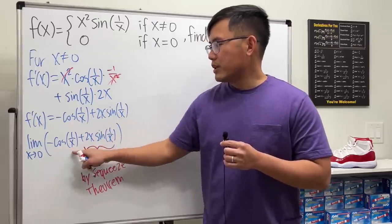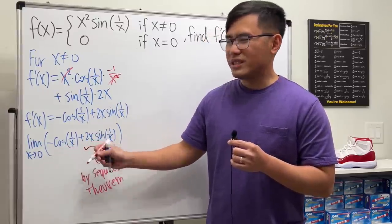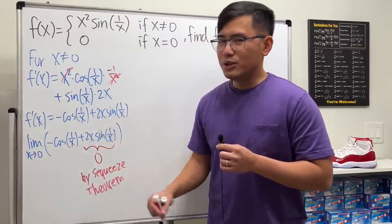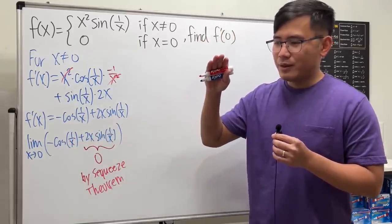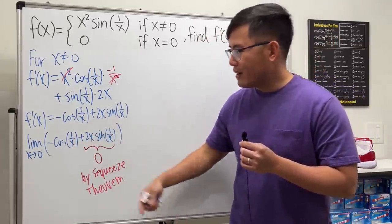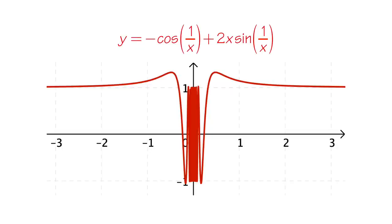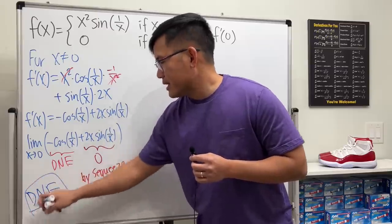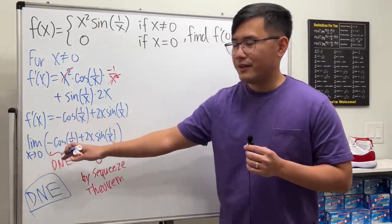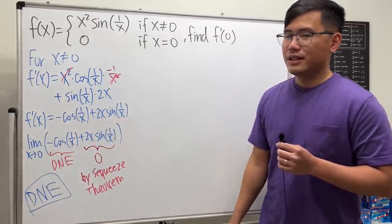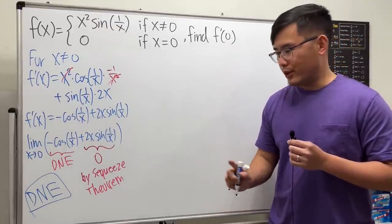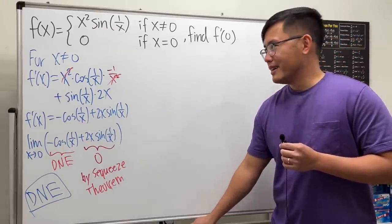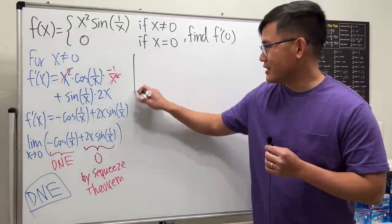But here is the part that will give us the trouble. Here, when we put 0 in here, this is cosine of 1 over 0, it's like infinity. And this right here just means that this is going to give us, in between negative 1 and 1, oscillating forever. However, so the limit of the derivative when x is approaching 0 doesn't exist. So does that mean this doesn't exist? No. It's really weird. Now, let's go ahead and just check this out.